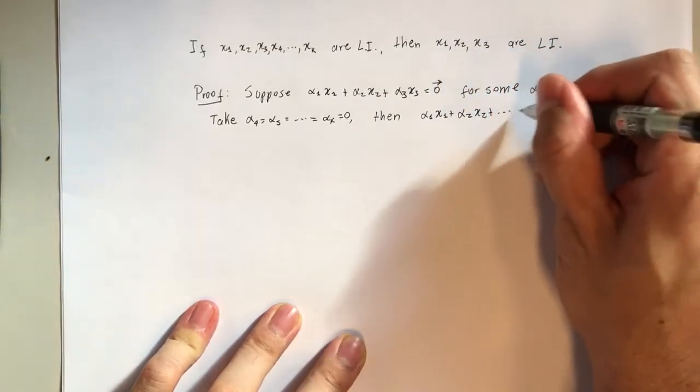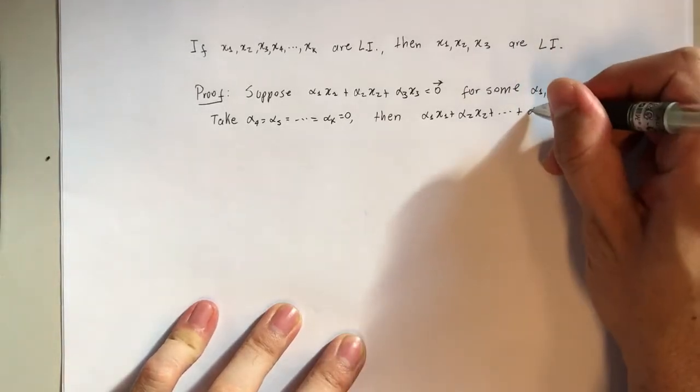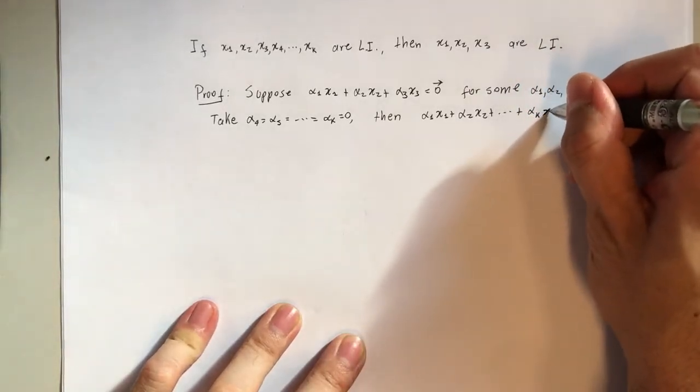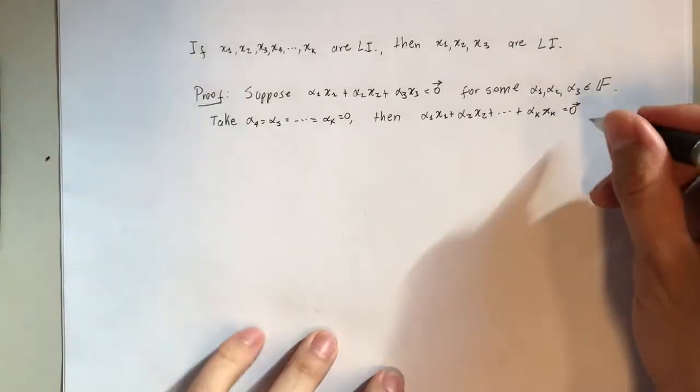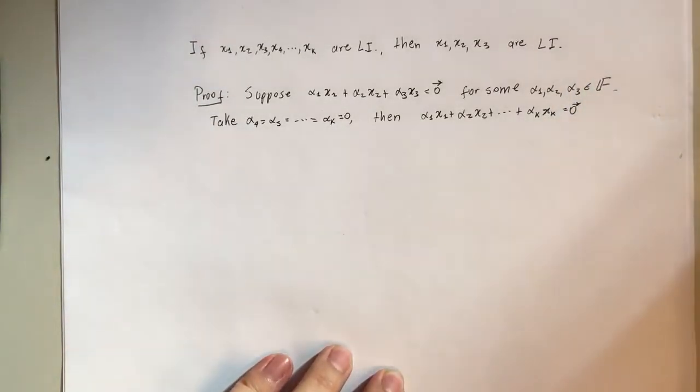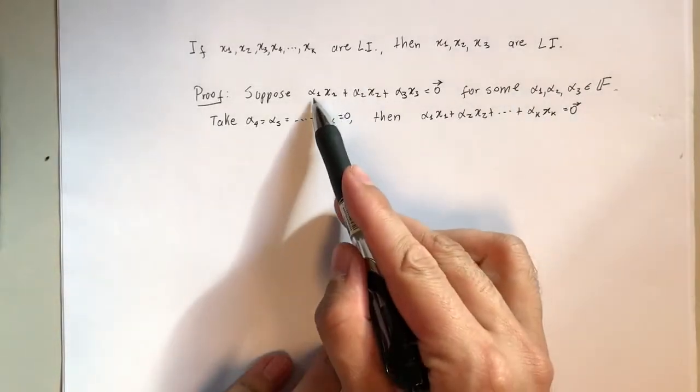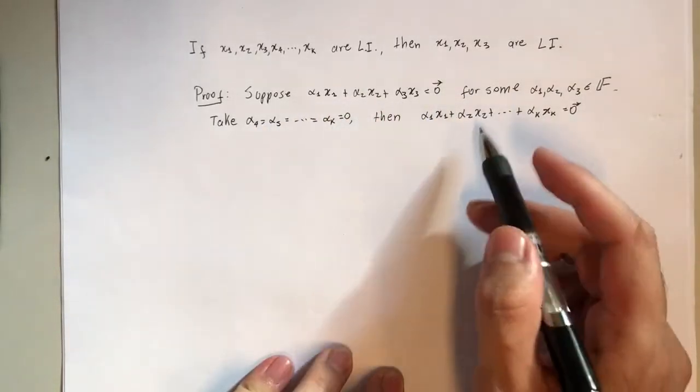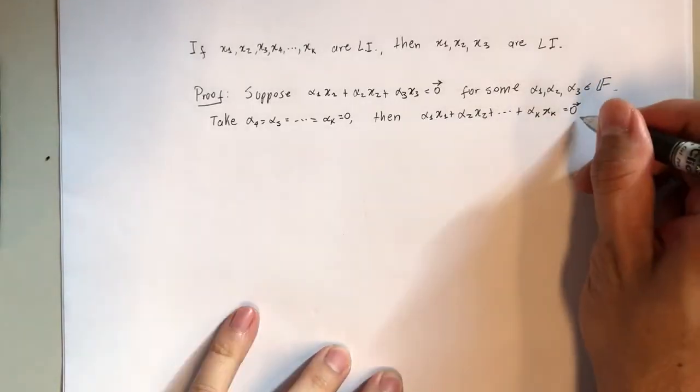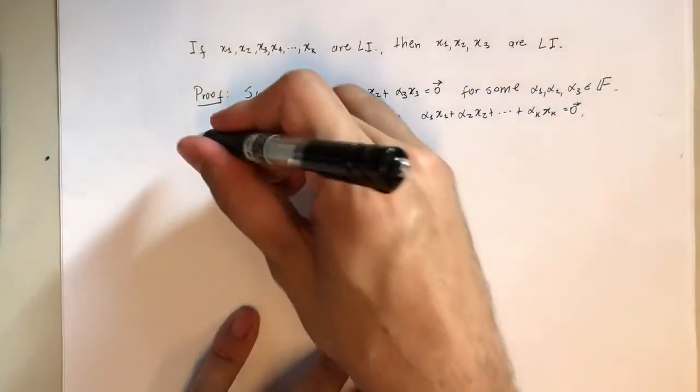if we add them all together, because by assumption this part is zero and these are all zero, this sum can be decomposed into two parts and both are zero, and since